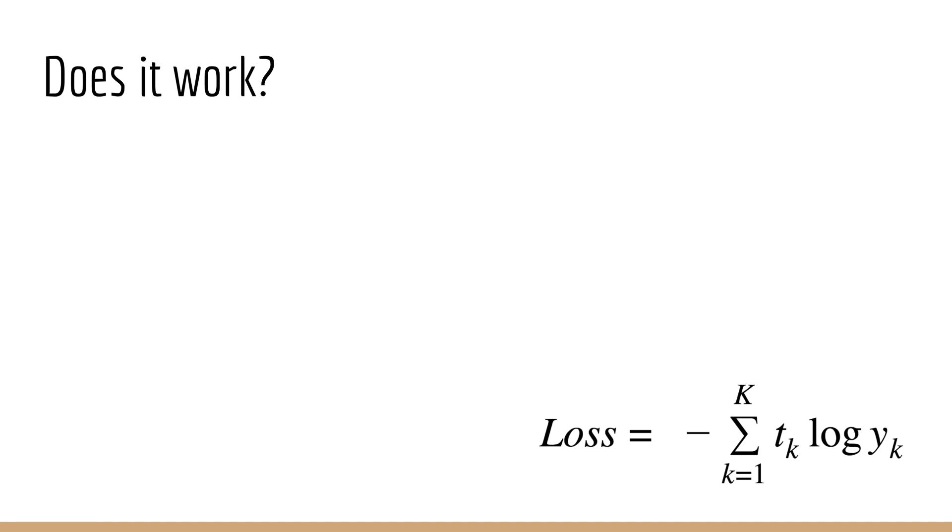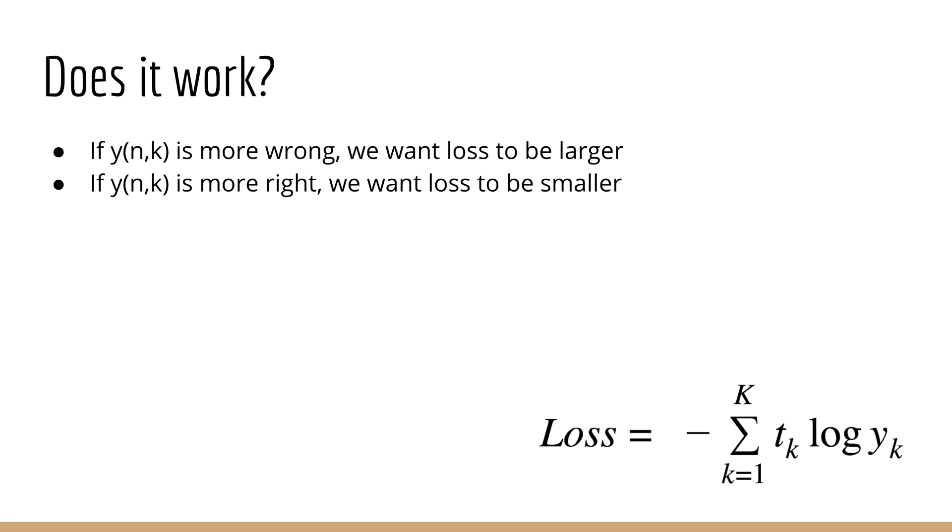As a final note, let's try to build some intuition to make sure the loss function does what we actually want it to do. Remember, if y of n k is very wrong, we want our loss to be large. But if y of n k is very close to the target, meaning it's very right, then we want it to be small. Let's assume we're working with only one sample, so there's no index for n. Then our loss is just the negative sum over k, T of k times log of y of k. Now suppose we are exactly right. Then for the T of k, where T of k is 1, we also have y of k is 1. Log of 1 is 0, so the total loss would be 0, which makes sense. Therefore, if we are perfectly right, then our minimum loss is 0.